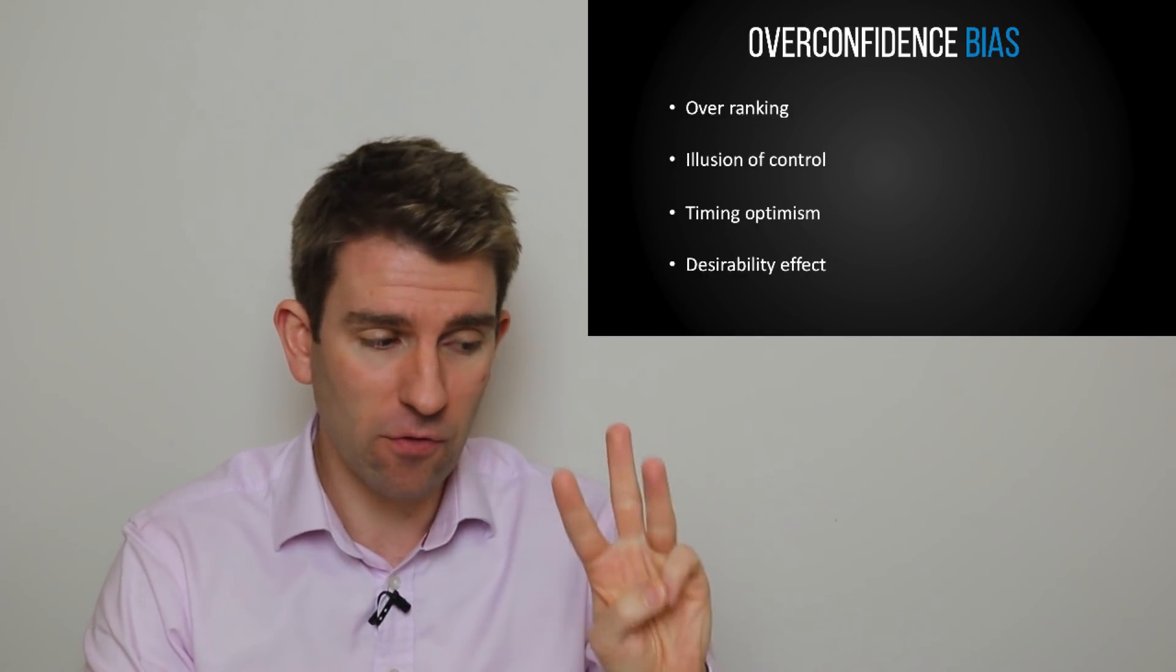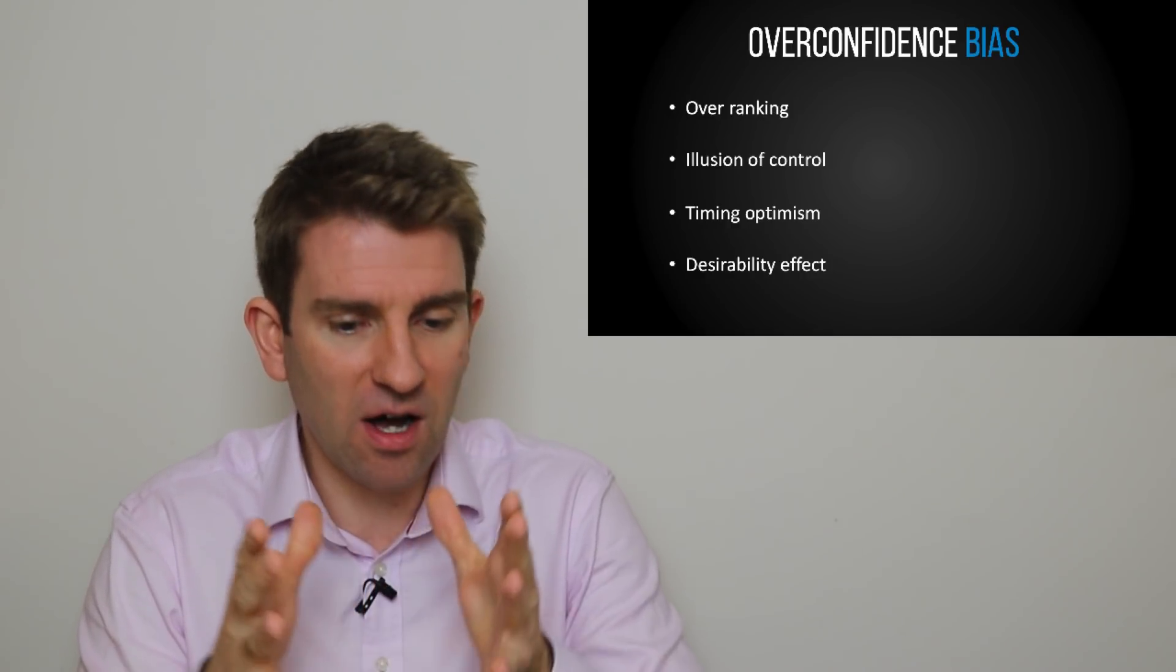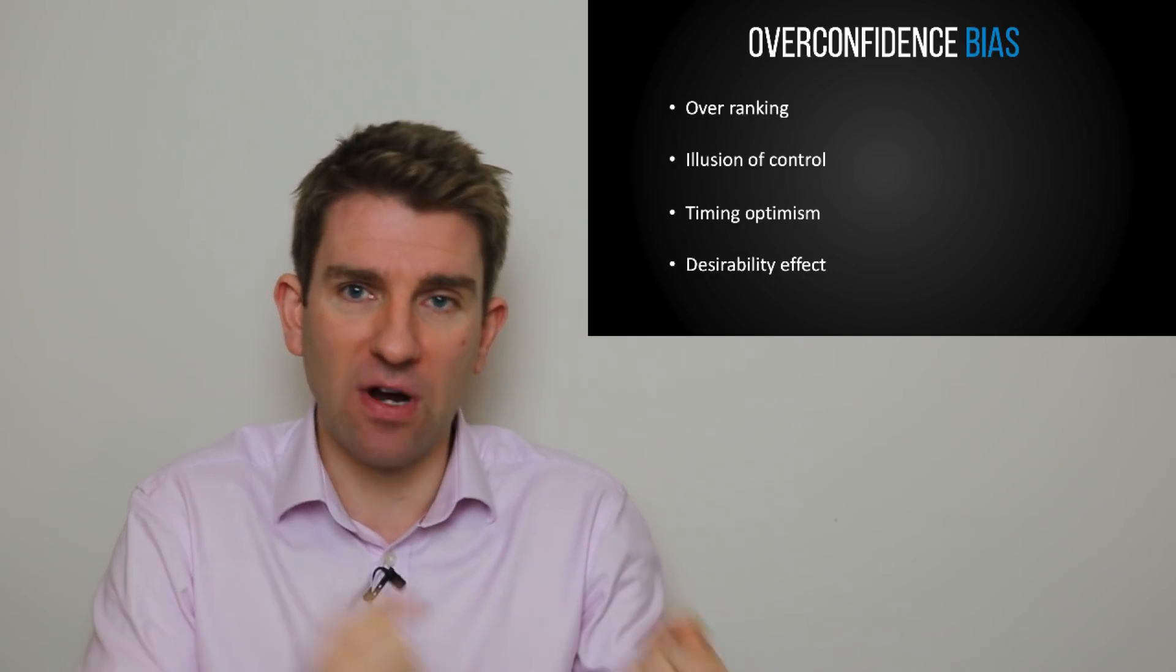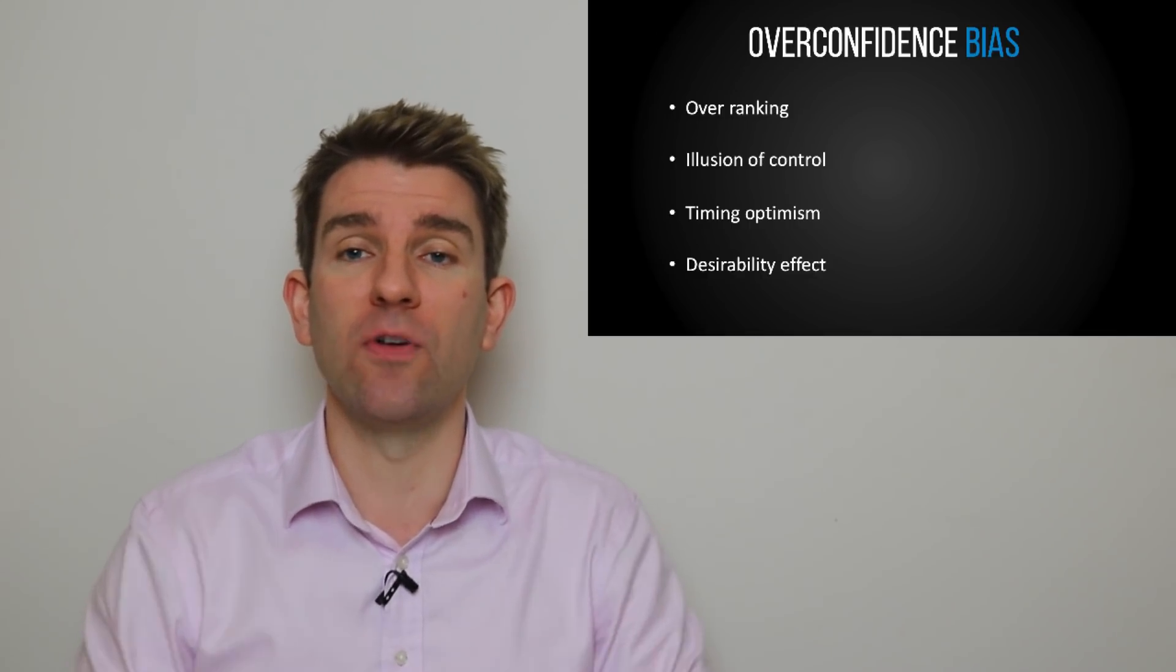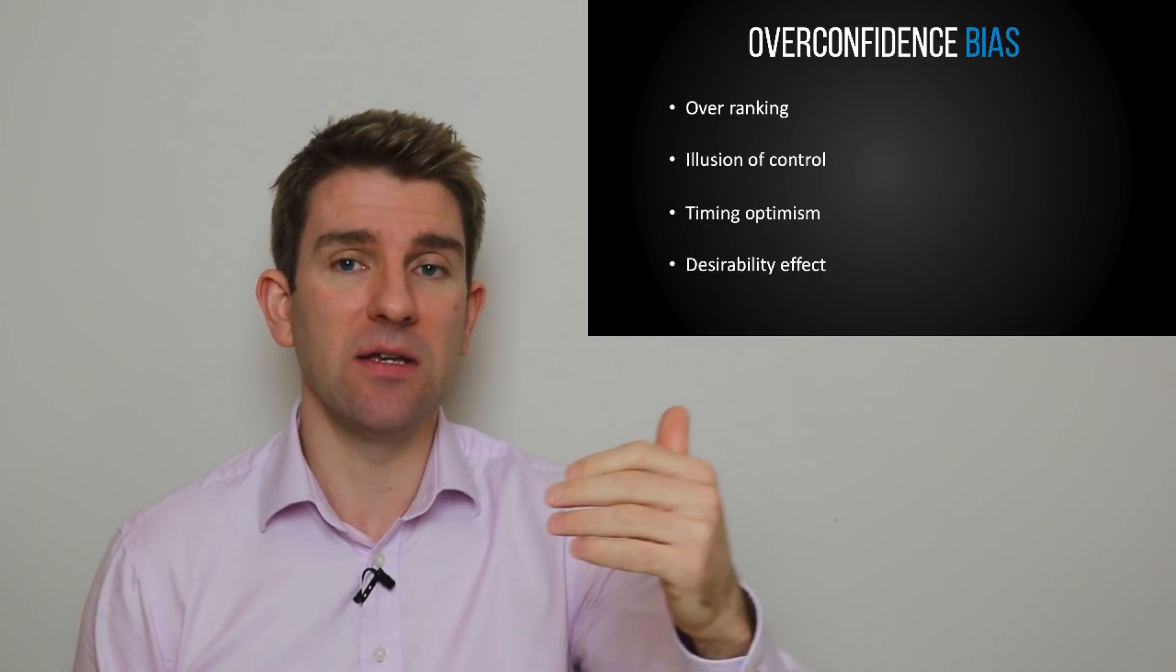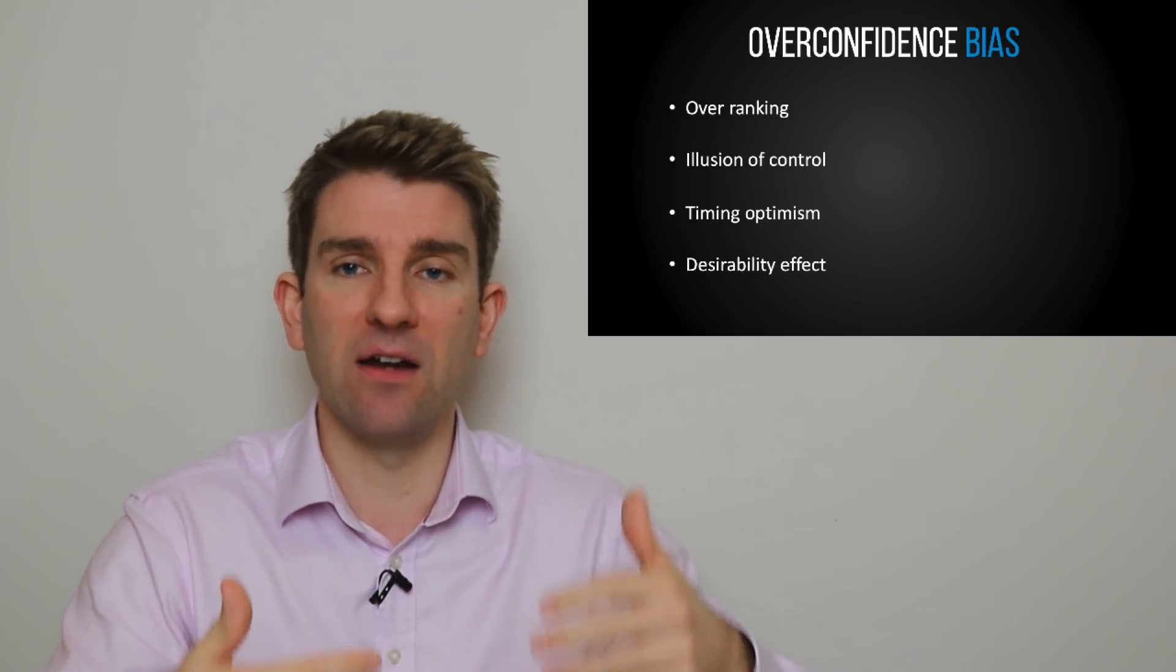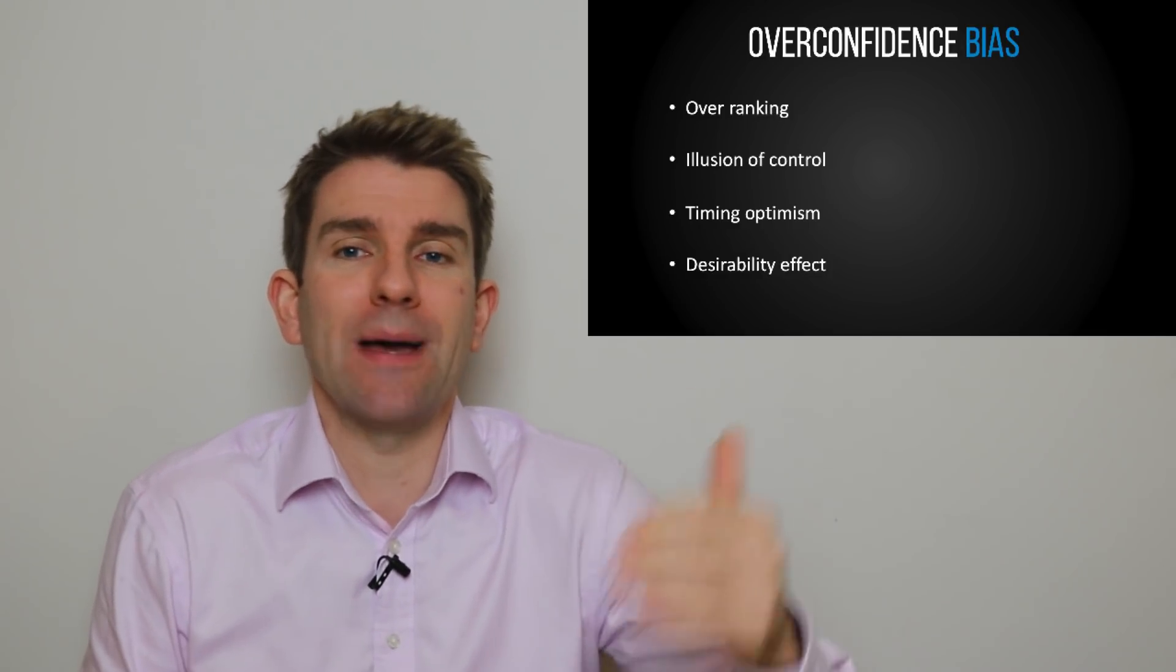So the final one, number four, guys, is desirability effect. So the desirability effect is we overestimate the odds of something happening because we want it to happen, and it's preferable to the alternative. I guess an easy analogy would be a sporting analogy for your country playing football or whatever sport it is. You overestimate the chance of them winning rather than looking at it objectively and saying, well, the odds are this. You think, well, they will win, especially if you're a fan and you're into the sport and you're into the country and all that kind of stuff. You want them to win more, so you expect it to happen more.